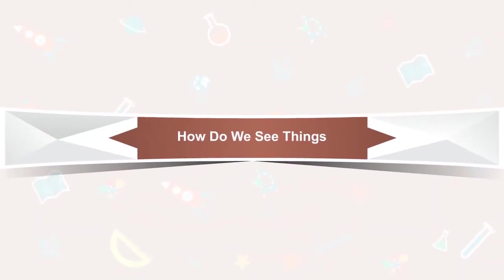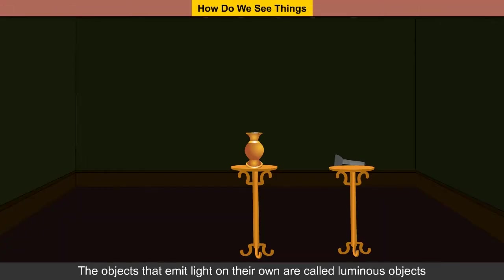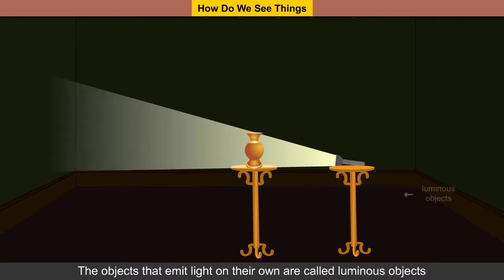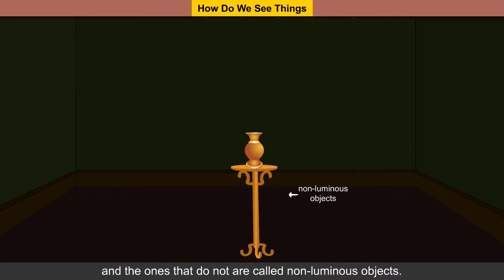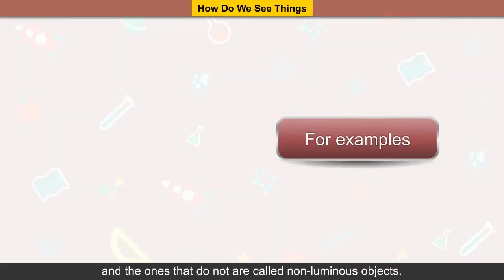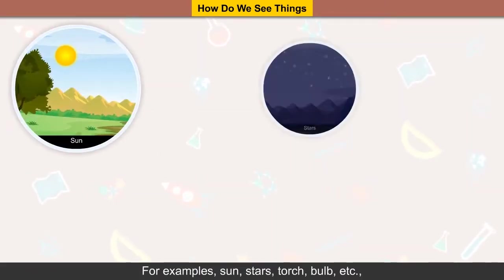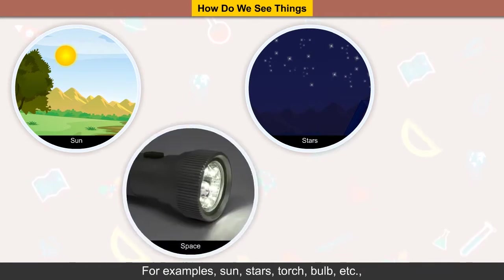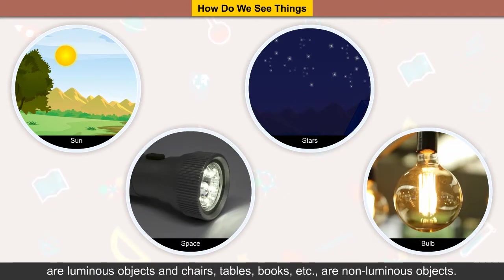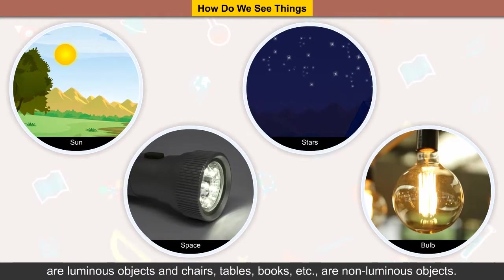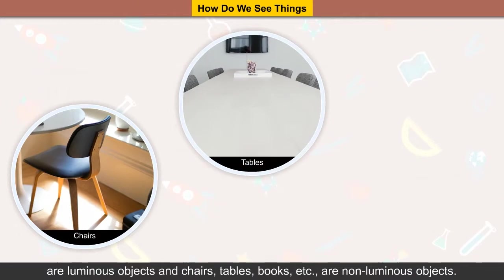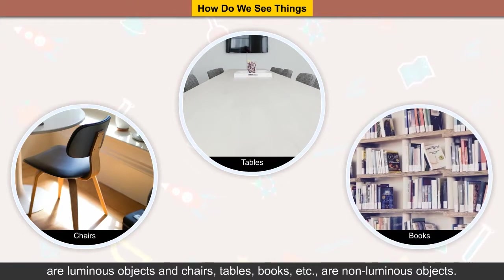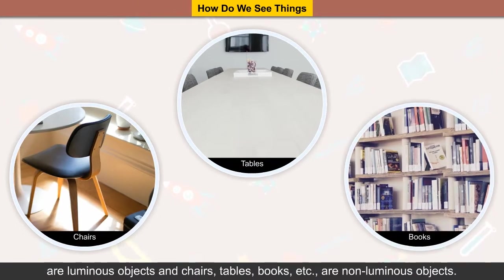How do we see things? The objects that emit light on their own are called luminous objects, and the ones that do not are called non-luminous objects. For example, the sun, stars, torch, and bulb are luminous objects, while chairs, tables, and books are non-luminous objects.